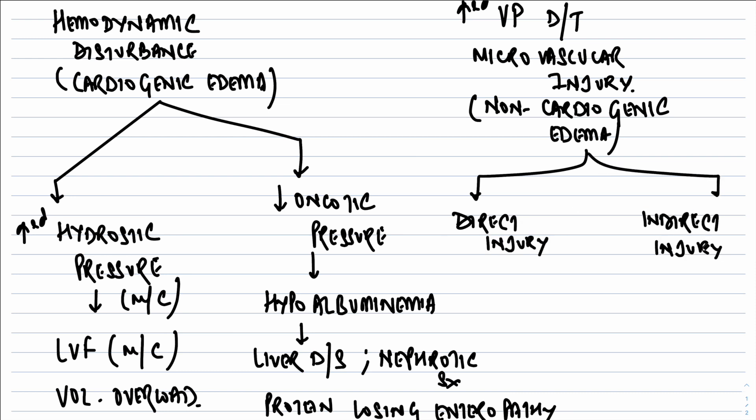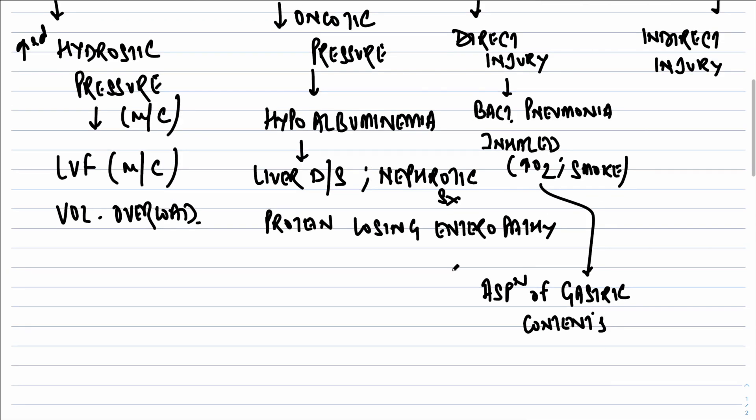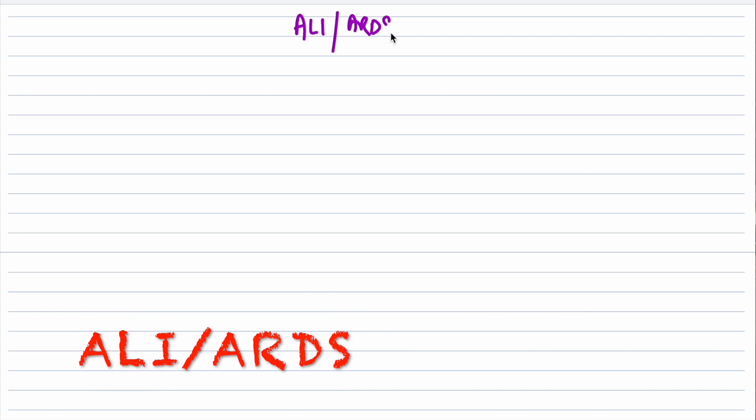Causes of edema due to microvascular or epithelial injury include direct and indirect injury. Direct injury includes infections like bacterial pneumonia, inhaled gases like high concentration oxygen and smoke, aspiration of gastric contents, drowning, or ionizing radiation. Indirect causes include systemic inflammatory response syndrome conditions like burns, sepsis, excessive trauma, or blood transfusion-related complications like TRALI.